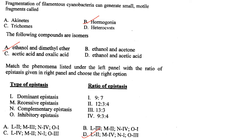Match epistasis types with their ratios. Dominant epistasis ratio is 12:3:1. Recessive epistasis ratio is 9:3:4. Complementary epistasis ratio is 9:7. Inhibitory epistasis is 13:3. So L2, M4, N1, O3. Answer is option D.